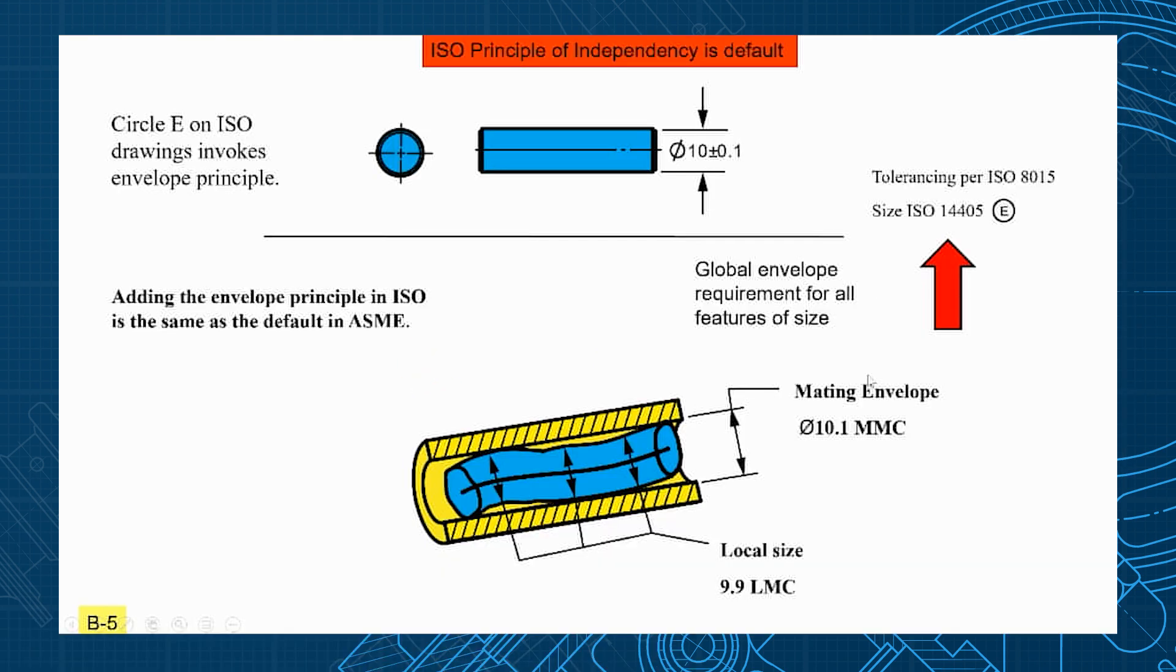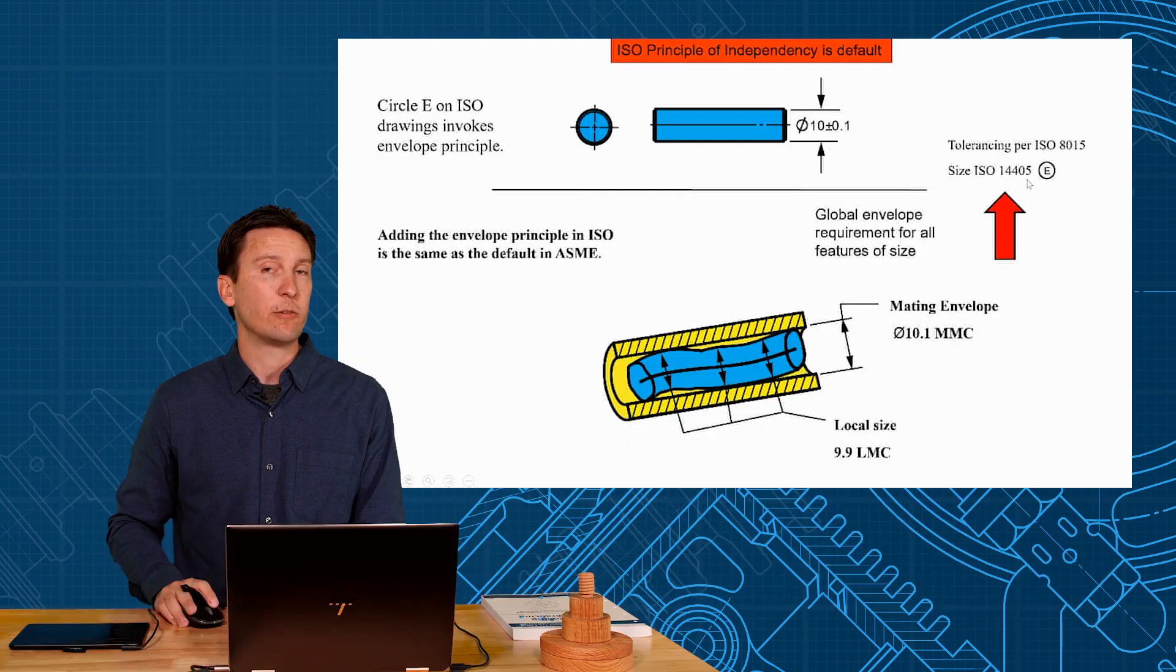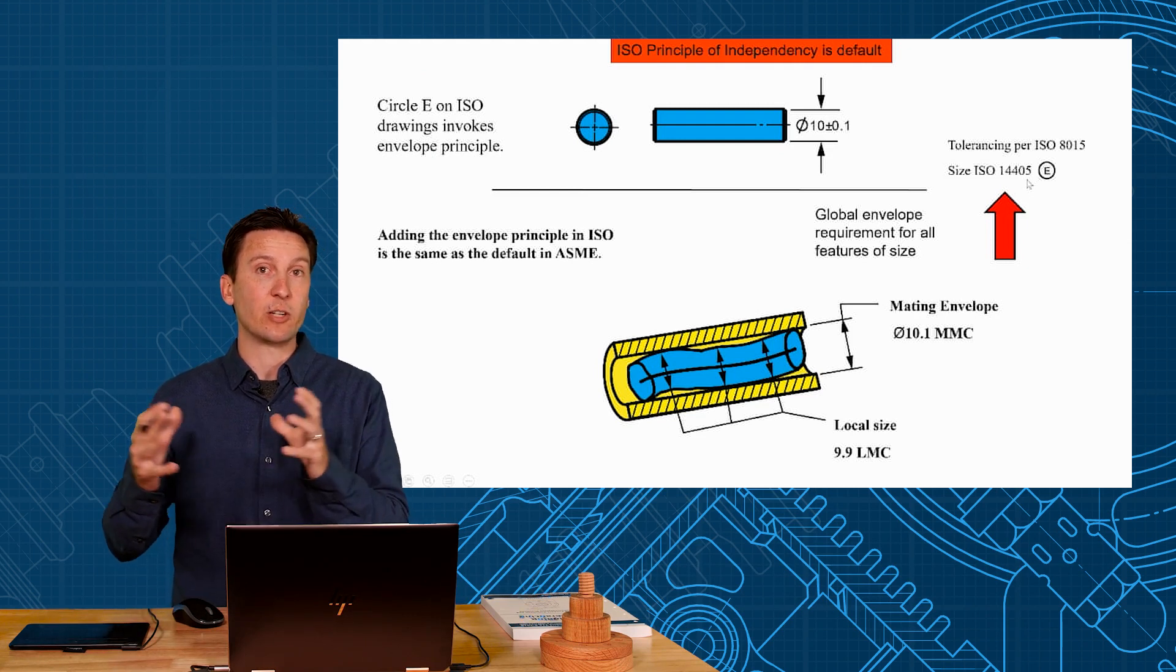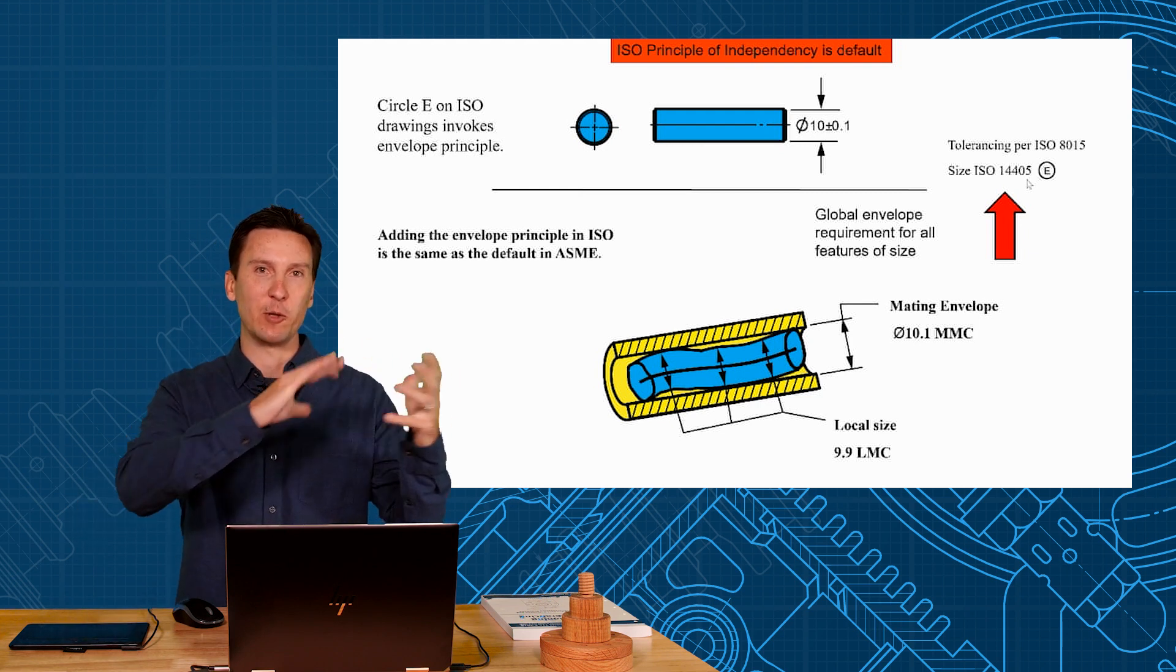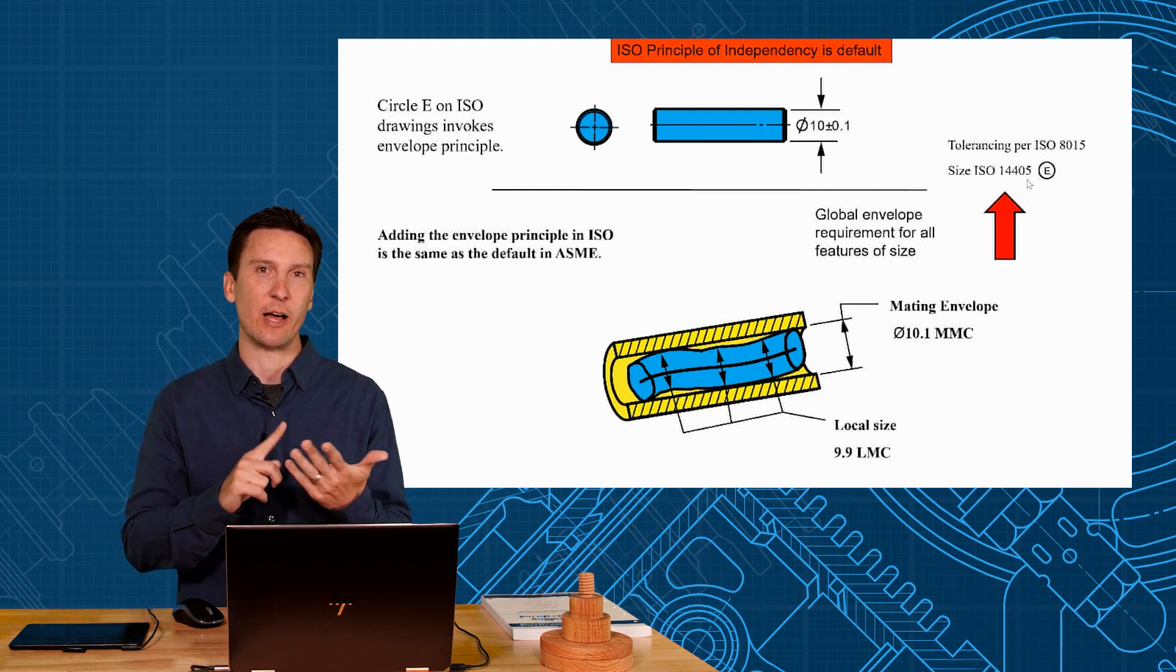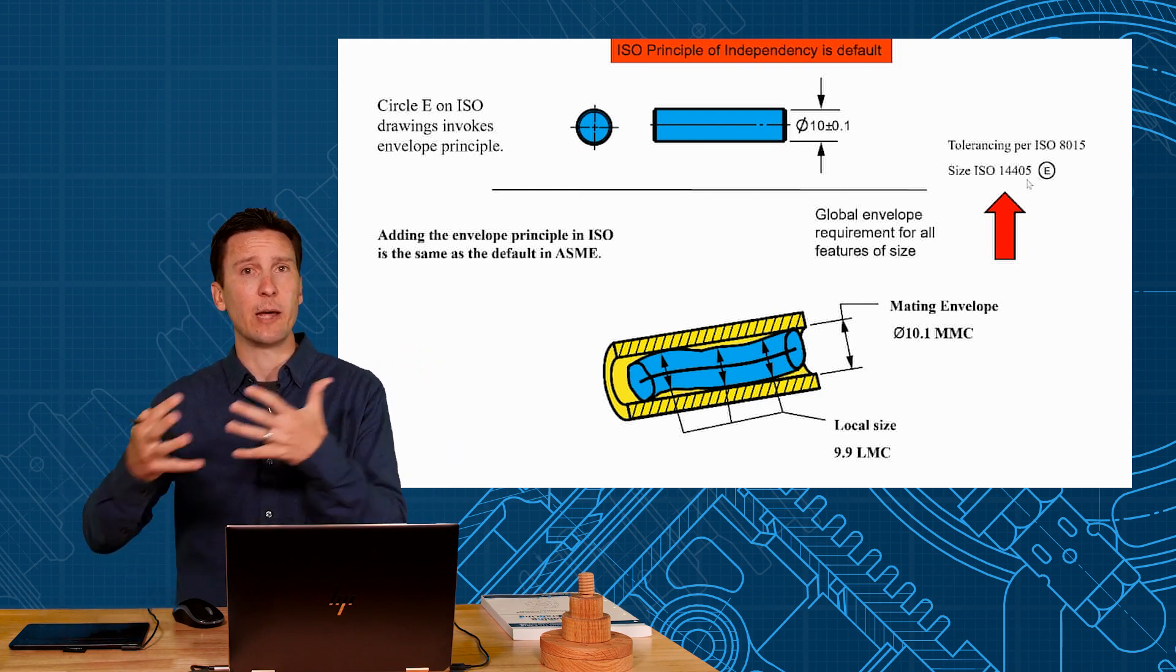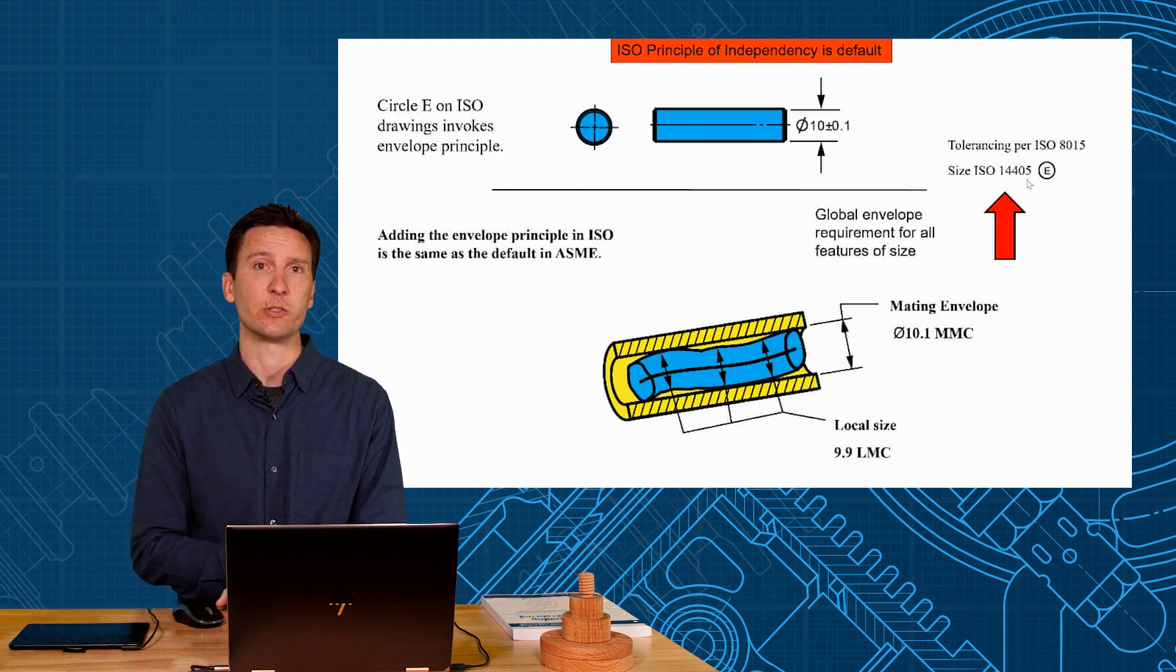Now another option that we can do on the corner of your drawings in the title block we can add a global requirement for all features of size on the drawing and you write size ISO 14405 circle E. 14405 is the standard dealing with size tolerances and they have a way that you can add this note to your title block which is a global requirement of envelope principle on all your holes, shafts, slots and tabs. And if you do that you can make it the same as our ASME Y14-5.